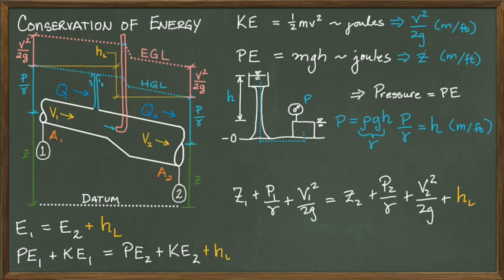While it might be interesting to think about how high the water will squirt if there is a pipe rupture, we mainly use conservation of energy as a tool to help us find the pressure at any point in a system. In other words, we are often solving this equation for the pressure at point 2. I will develop this process further in the next video.